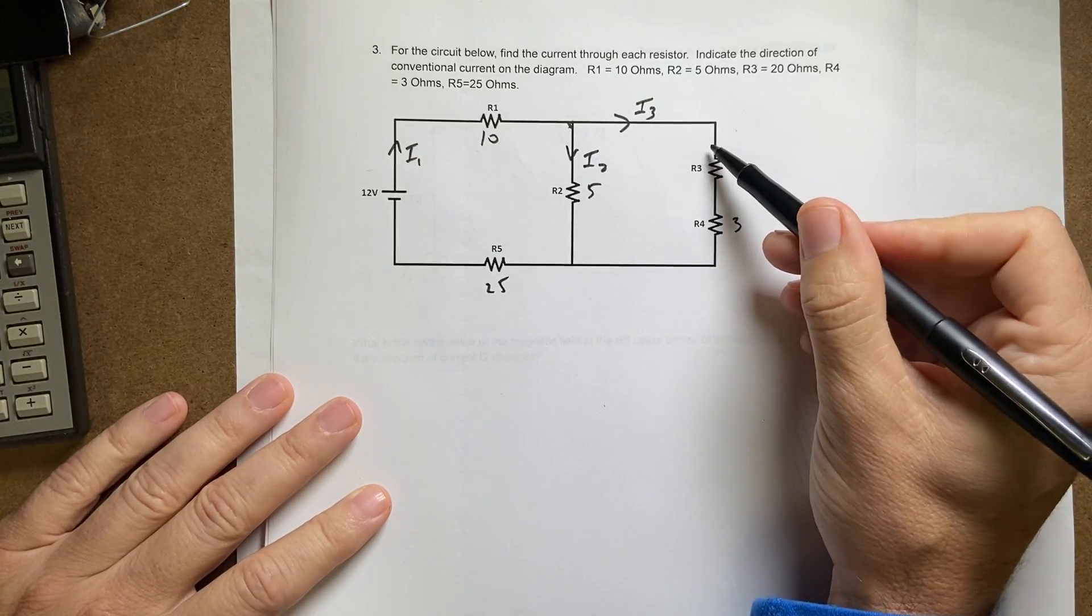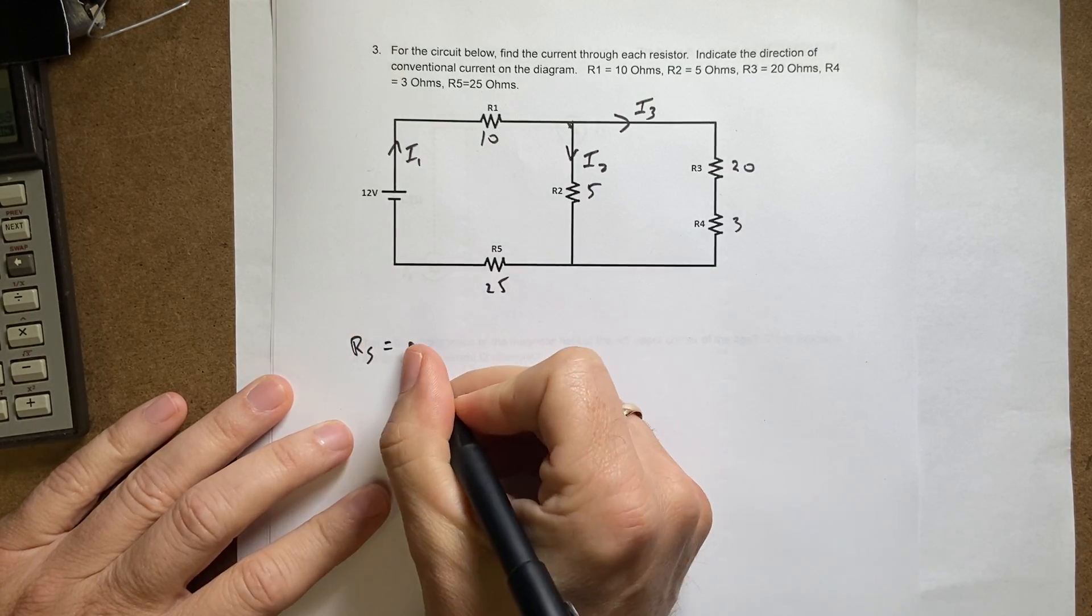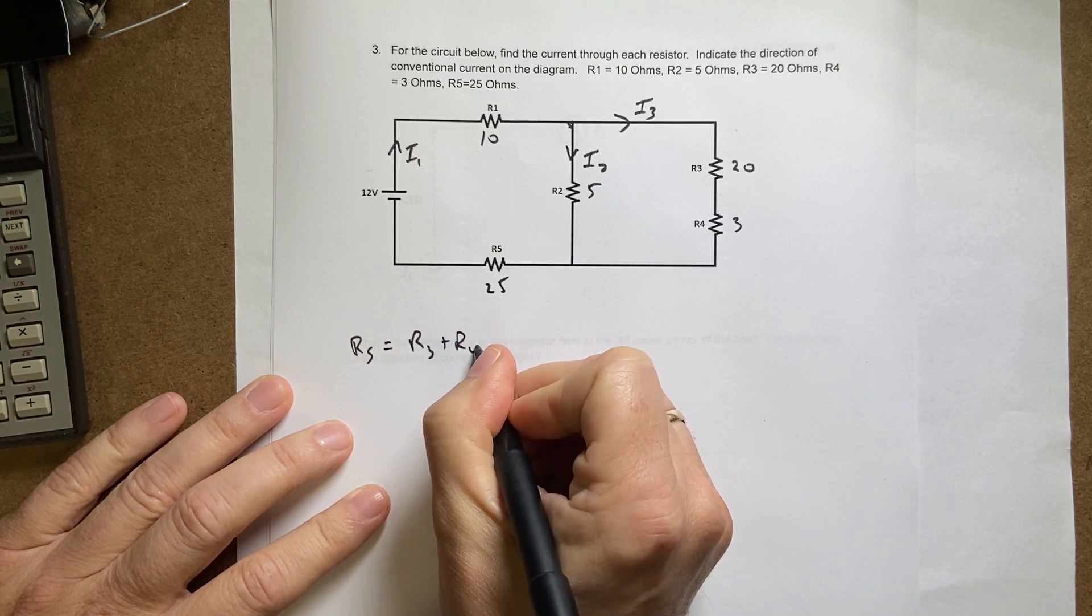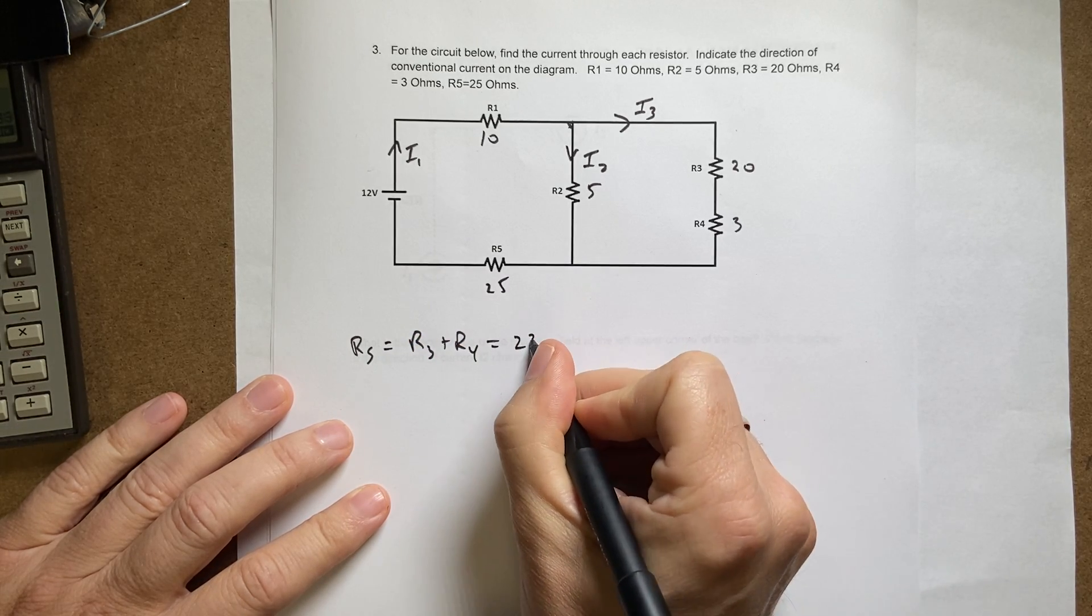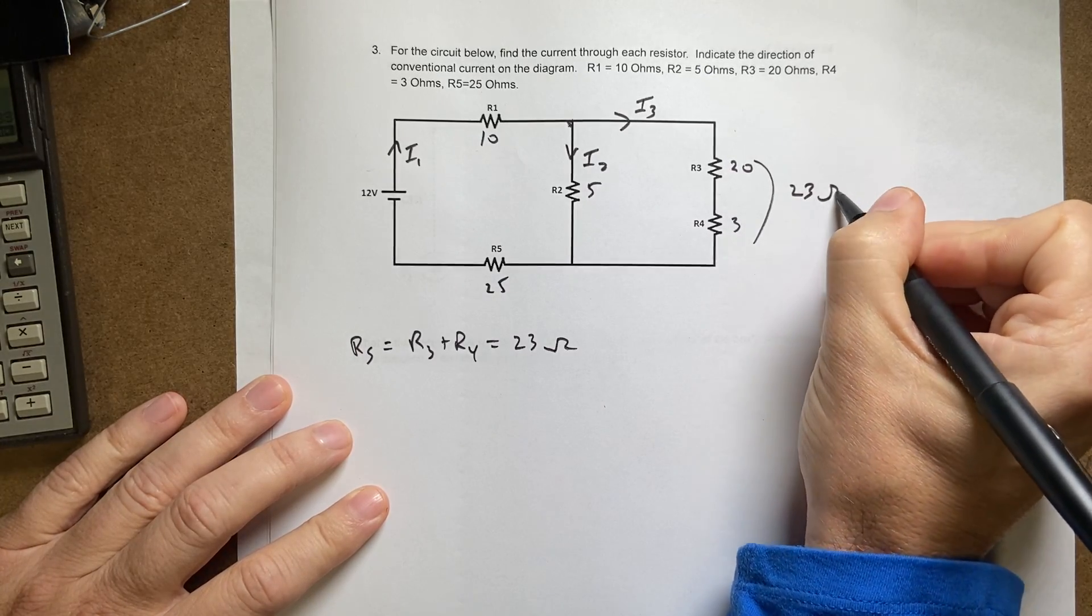Now I'm going to do one other thing. These two are in series, so R in series is equal to R3 plus R4, so that's going to be equal to 23 ohms. So this is the same as just one 23 ohm resistor, just to make things easier. You don't have to do that.